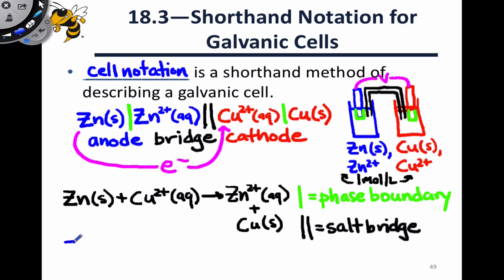Say for example we were working with a cell that contained within its anode zinc solid and 0.1 molar Zn2+, which is non-standard conditions. To indicate the concentration, we just put that concentration in parentheses after the species and its phase, like so. From here we could continue on and use the double line to represent the salt bridge, and so on and so forth.